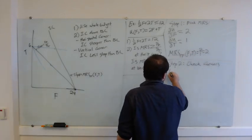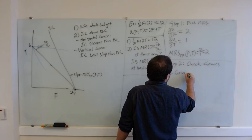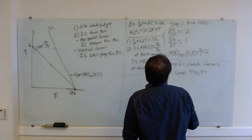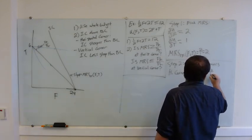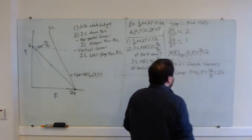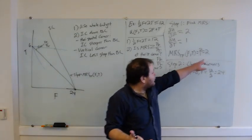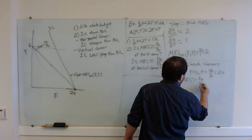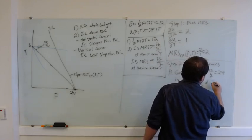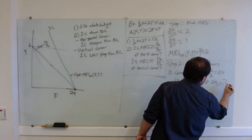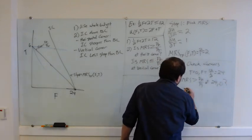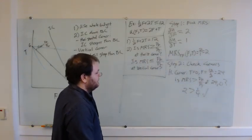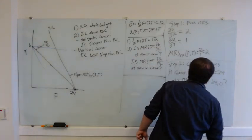Now we check our corners. For the horizontal corner, t equals zero and f equals 12 divided by one-half, which equals 24. We evaluate: is our MRS greater than our price ratio at (f=24, t=0)? In this case yes — we have 2 greater than one-quarter. So yes, in this case we have a horizontal corner solution.